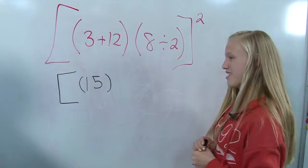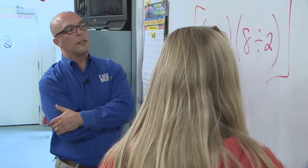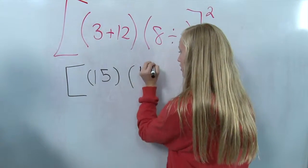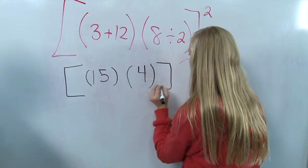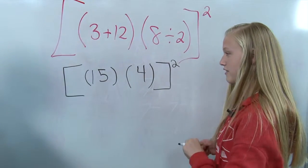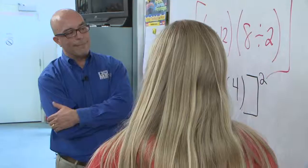Keep the brackets. And then 8 divided by 2, which is 4. Okay. And then 15 times 4.